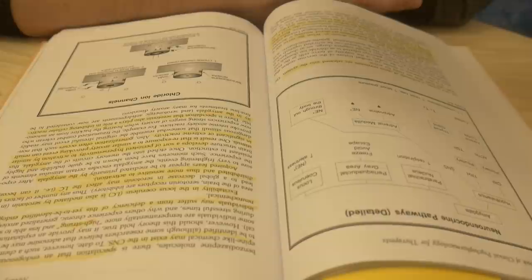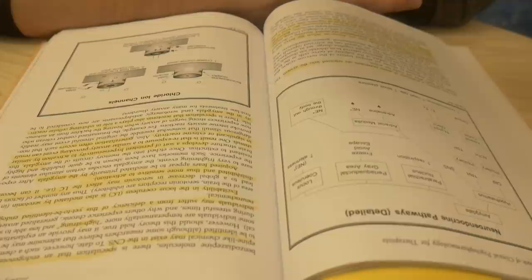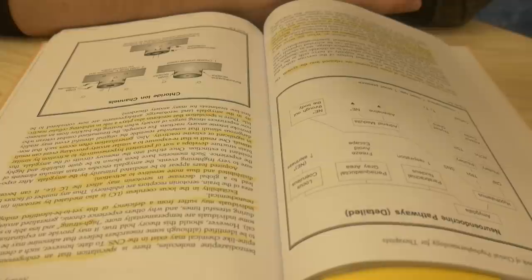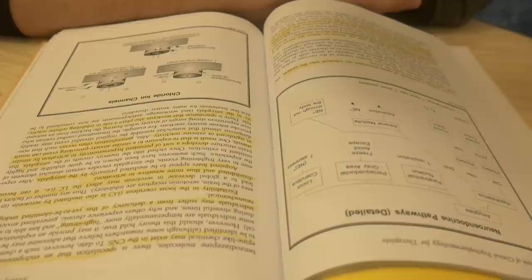Excitability in the locus coeruleus is also mediated by serotonin. In this area of the brain, the serotonin receptors are inhibitory. Thus, any number of factors that lead to a global decrease in serotonin may affect the locus coeruleus.